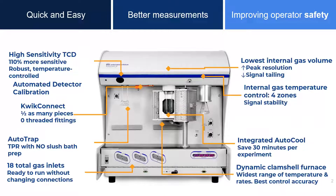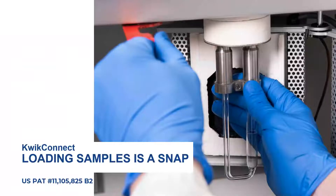The AutoCool system rapidly cools the sample, saving time on every experiment. The furnace has the capability of reaching a maximum temperature of 1200 degrees Celsius, the highest in the industry. Heating rates can be controlled from 0.1 to 100 Celsius per minute. The patented quick connect design makes sample tube installation faster, easier, and more reliable than traditional designs.